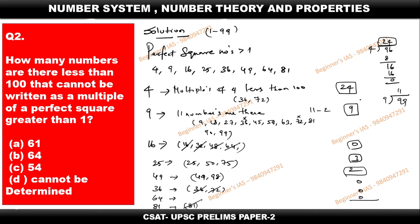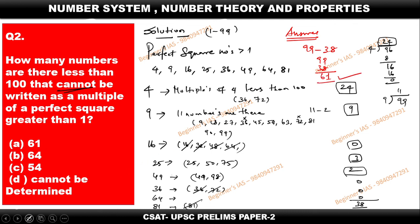Now add all the counts: 24 (multiples of 4) + 9 (multiples of 9) + 0 (16) + 3 (25) + 2 (49) + 0 (36) + 0 (64) + 0 (81) = 38 numbers that are multiples of a perfect square. Since the question asks for numbers less than 100 that cannot be written as such multiples: 99 minus 38 equals 61. Therefore, 61 is the answer.